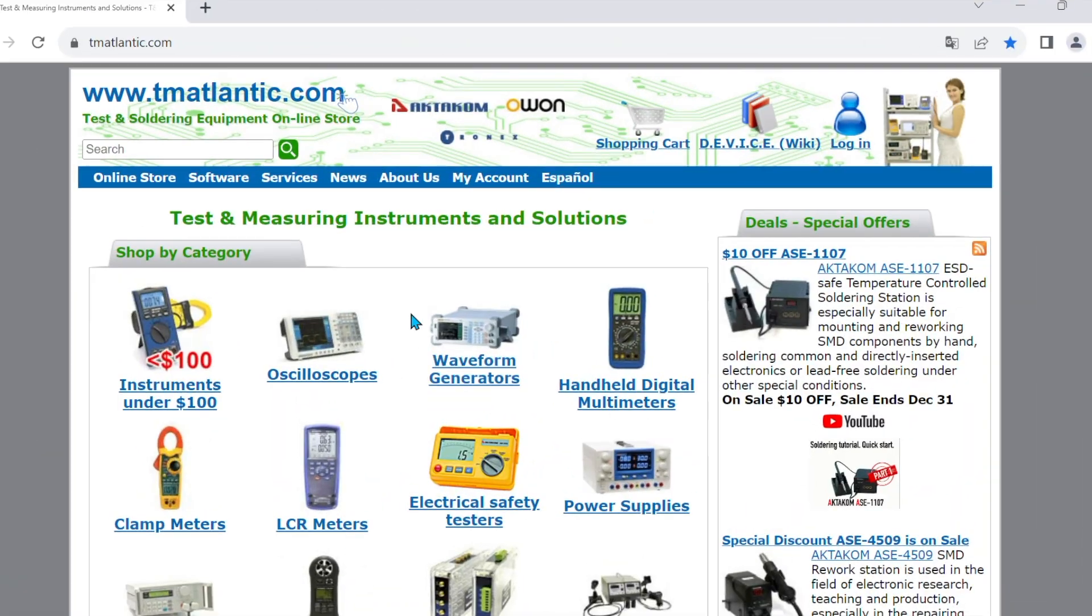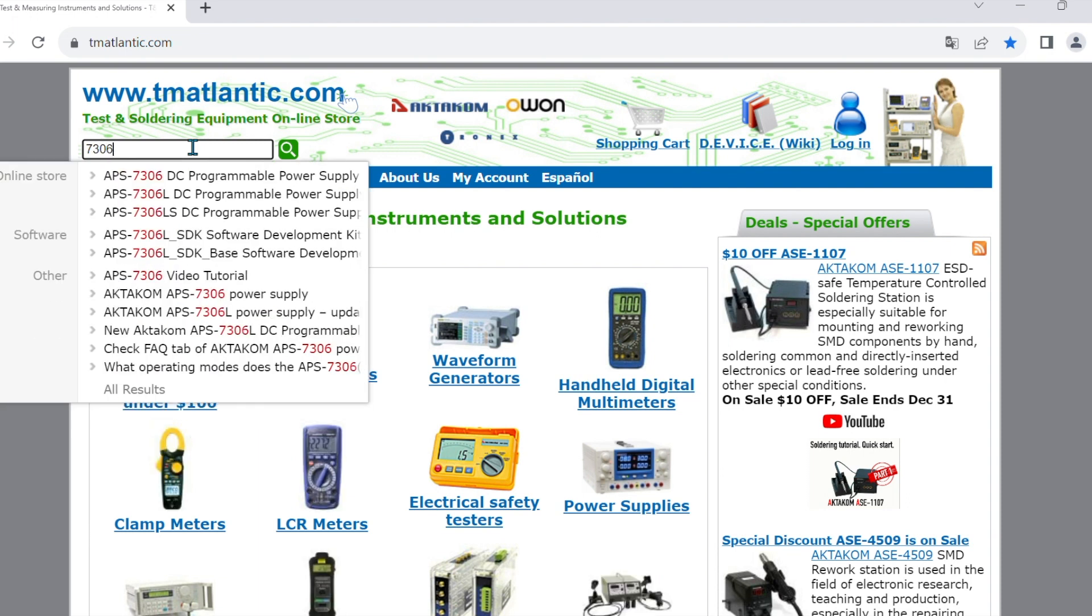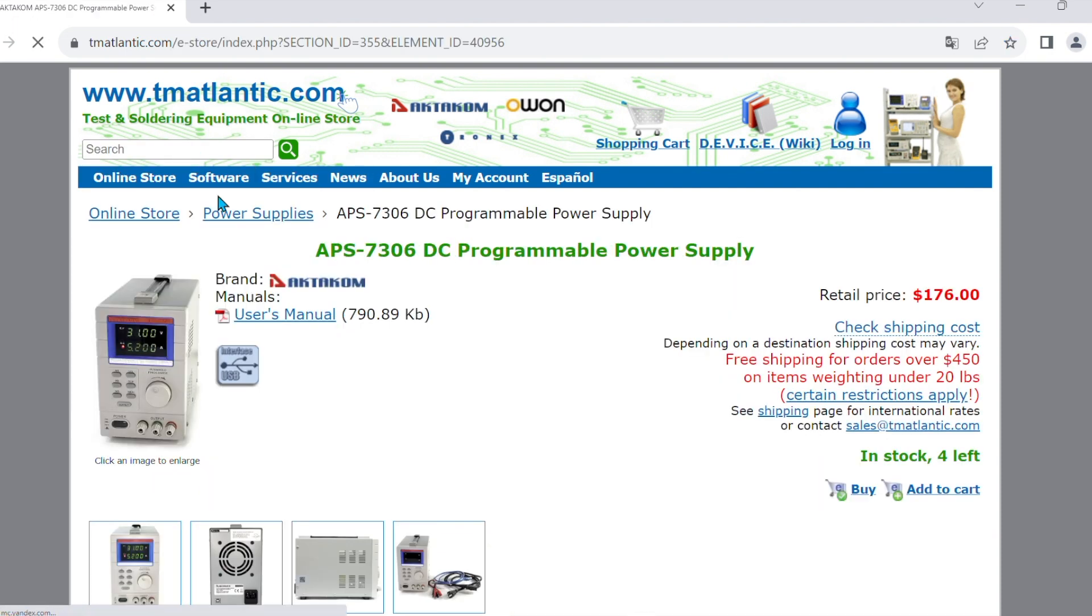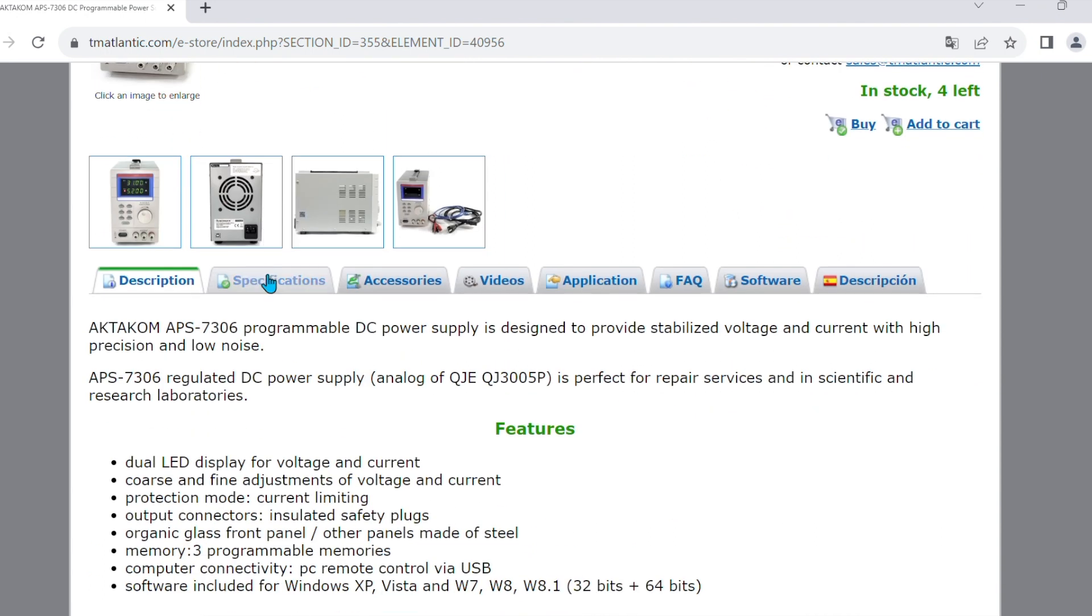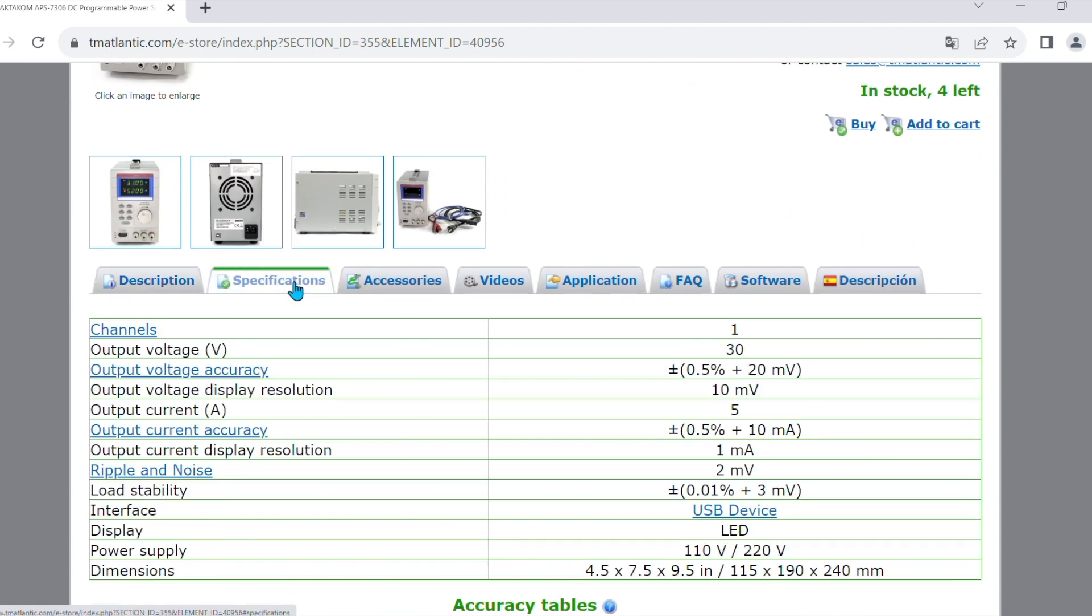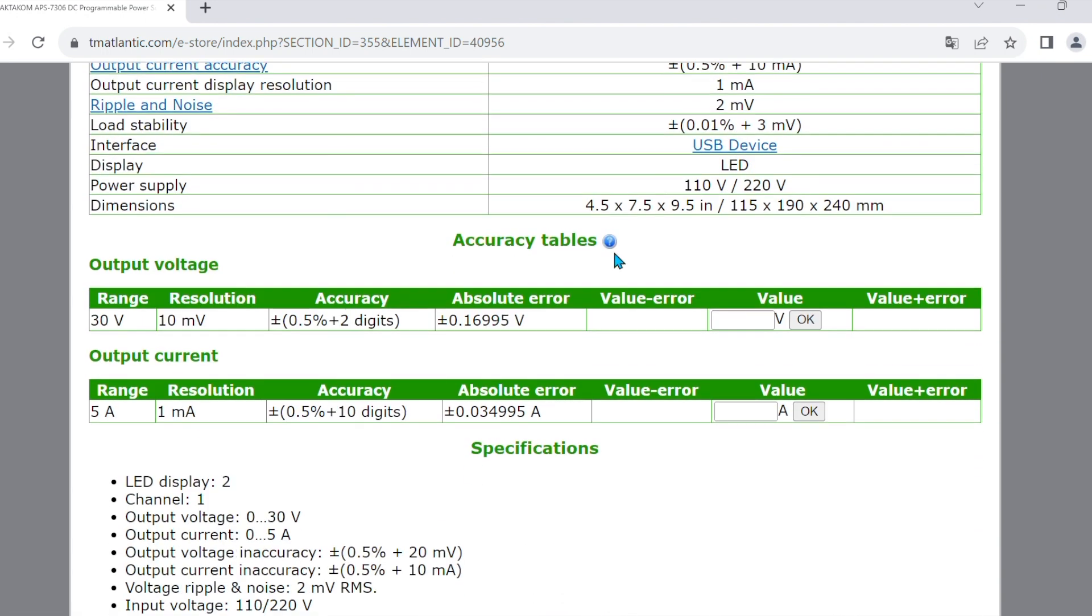At first glance, this was a question of the accuracy of the power supply itself. To be sure about this APS7306, let's see what spread of power supply readings are possible at the output from the value set on the indicator.